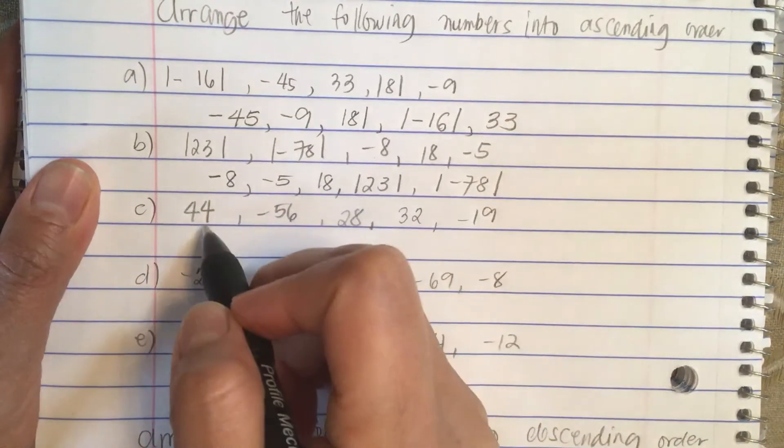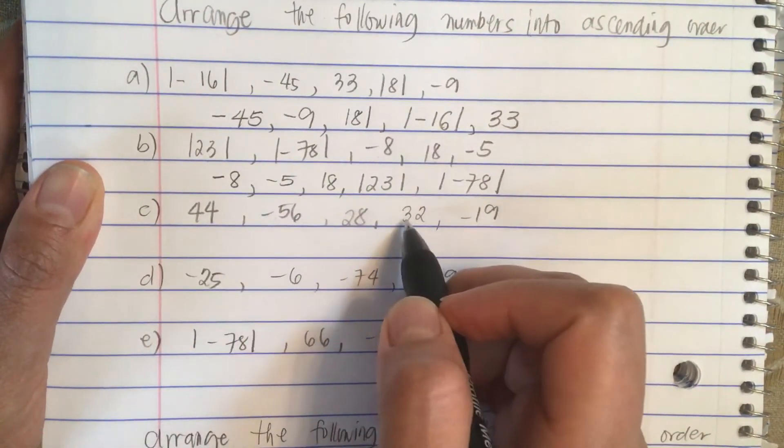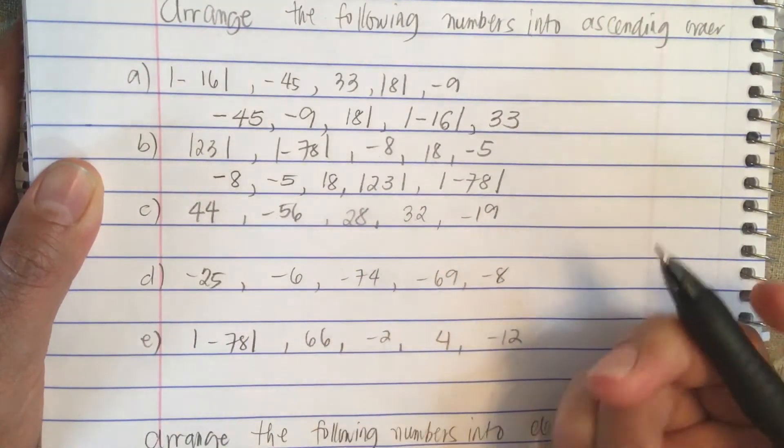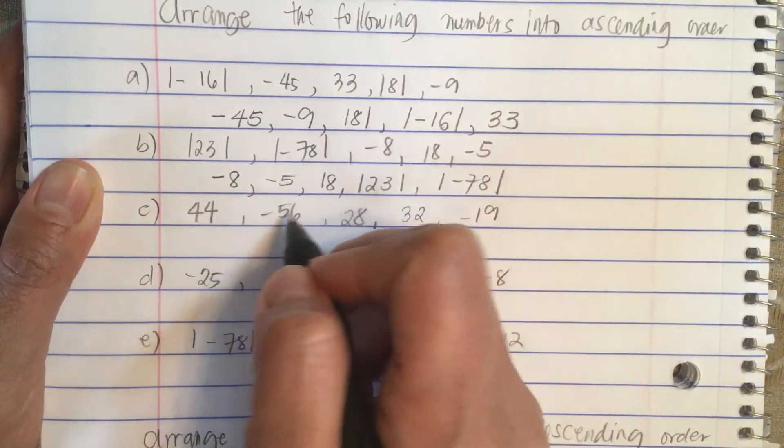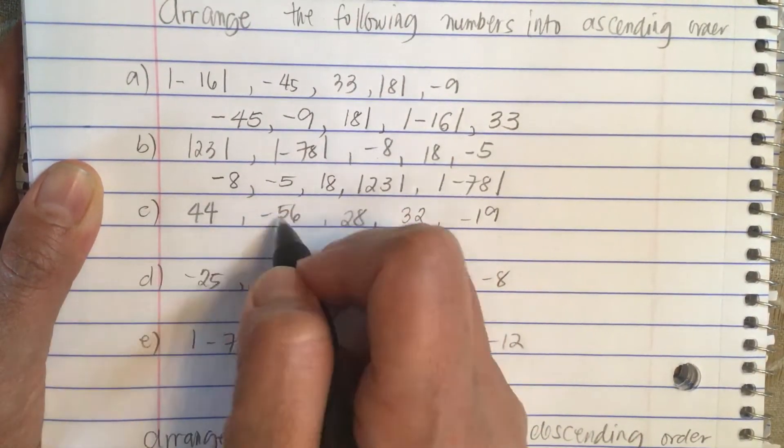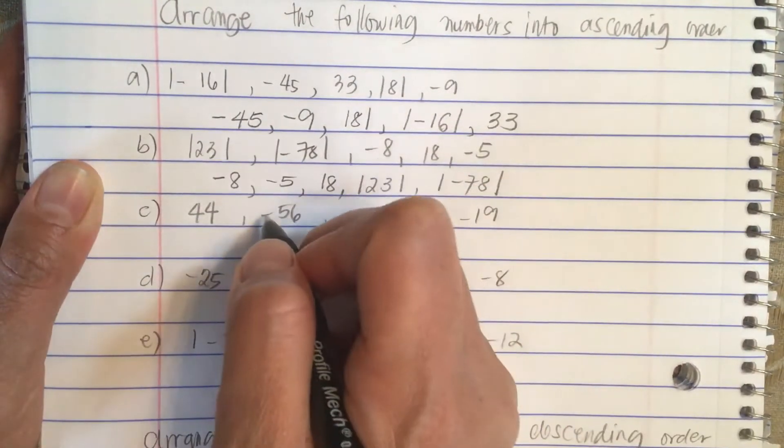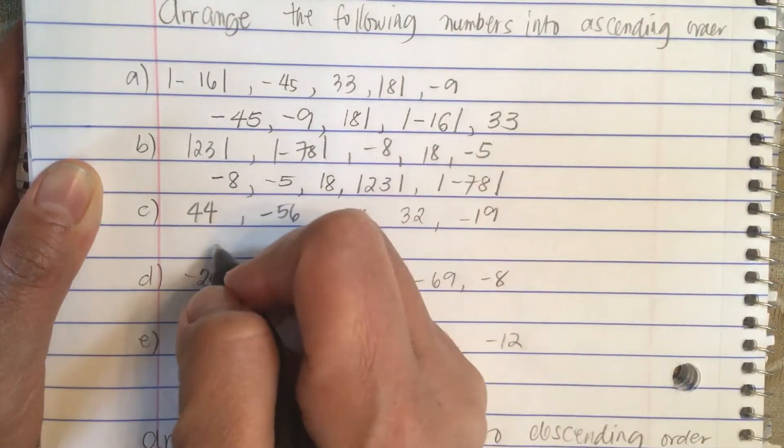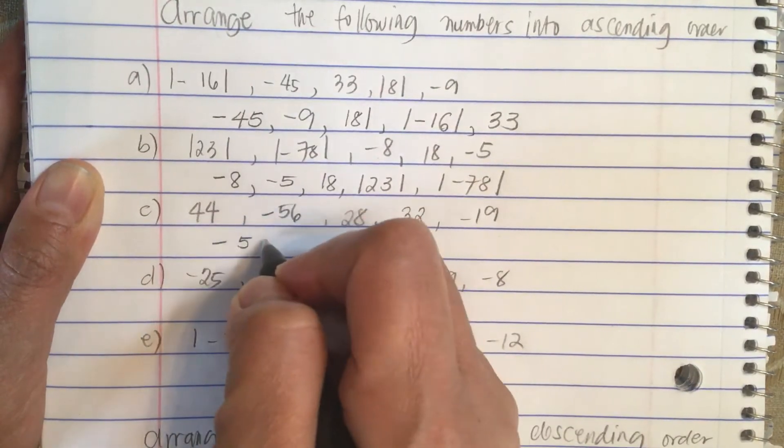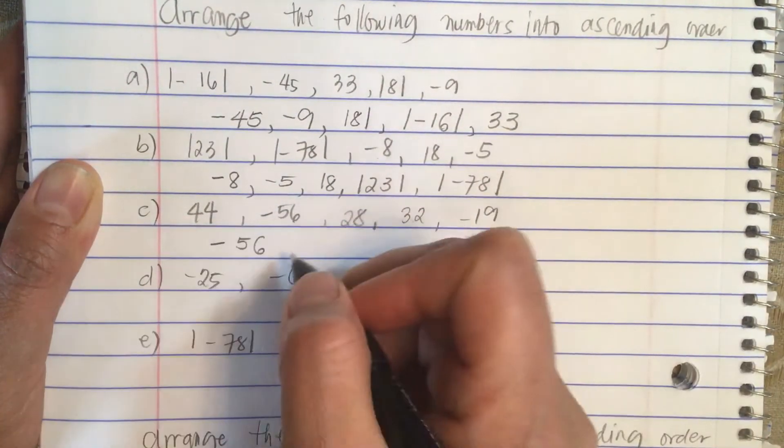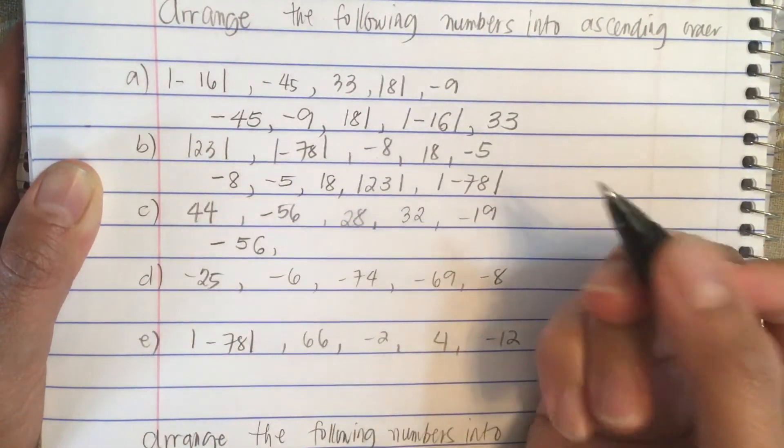So next one, we have 44, minus 56, 28, 32, and minus 19. Now when it comes to negative numbers, the bigger number is the smallest when it has a minus sign. So minus 56 is the smallest number.